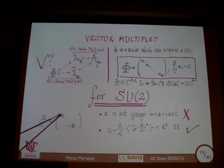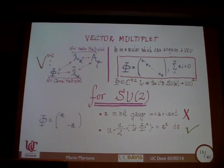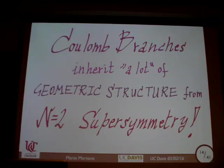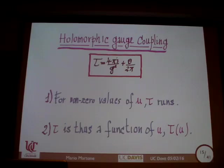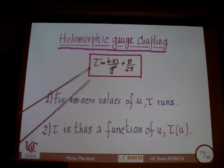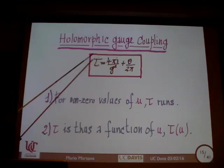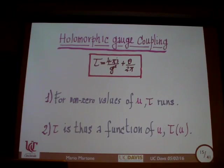The Coulomb branch has much more geometric structure. Let me give a roughly three-minute summary of Seiberg-Witten theory, which studies exactly what geometric structure this space has. First: we have a one complex-dimensional space, the Coulomb branch. Second: there is a holomorphic function tau of U defined on it — this is the holomorphic gauge coupling. Conceptually, tau is the gauge coupling. The gauge coupling in the IR depends on the scale at which the SU(2) breaks to U(1), and that scale is given exactly by the VEV you turn on.